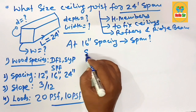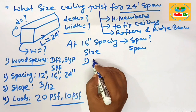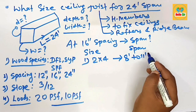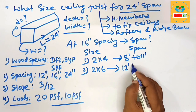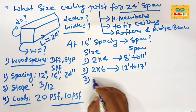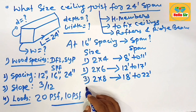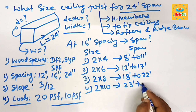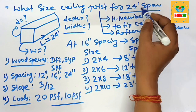As a standard practice at 16-inch spacing, the span of different dimensional lumber sizes are: a 2x4 can span 8 to 11 feet, a 2x6 can span 12 to 17 feet, a 2x8 can span 18 to 22 feet, and a 2x10 can span 23 to 29 feet.